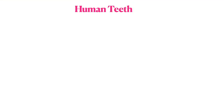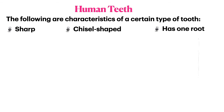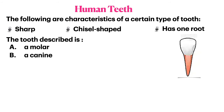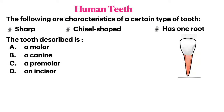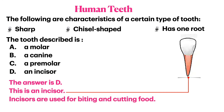The following characteristics describe a certain type of human teeth: they are sharp, they are chisel shaped, and they have one root. Which type of teeth are described — a molar, a canine, a premolar, or an incisor? The answer is D — the teeth described are incisors. Incisors are used for biting and cutting food.